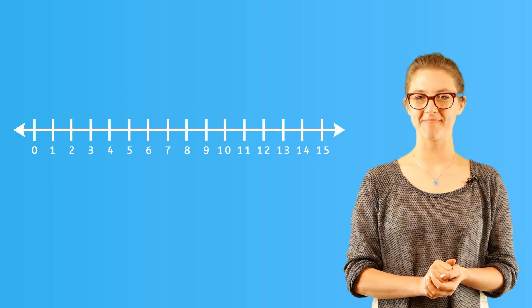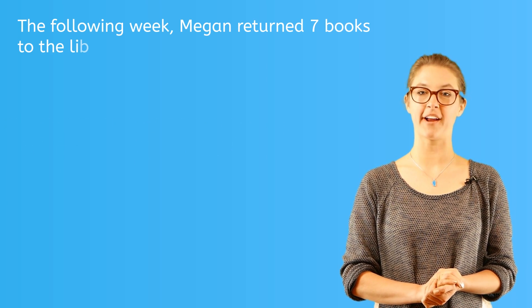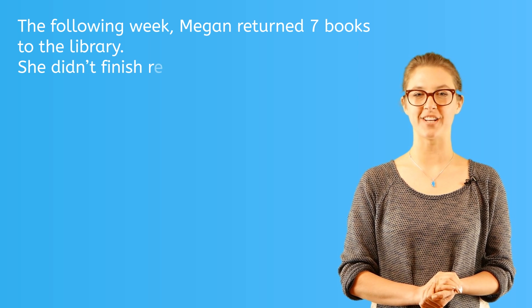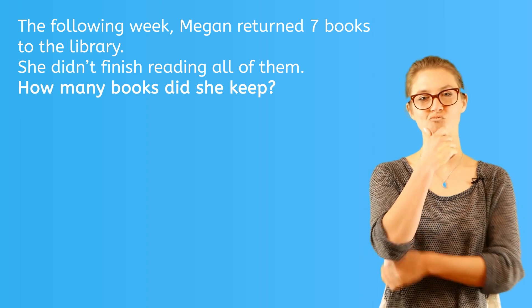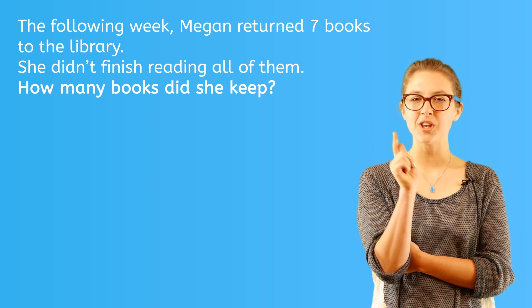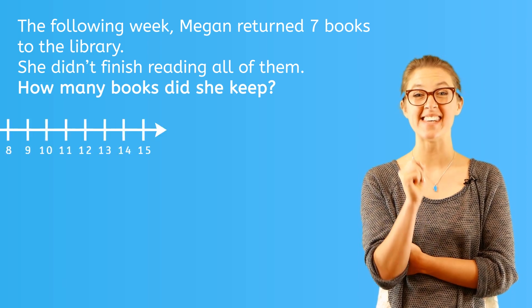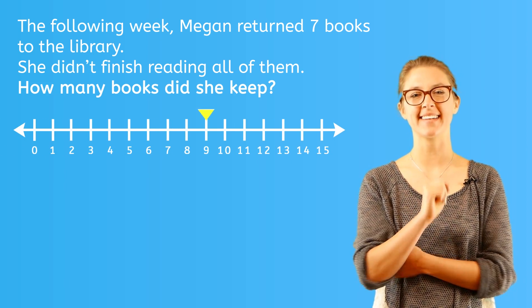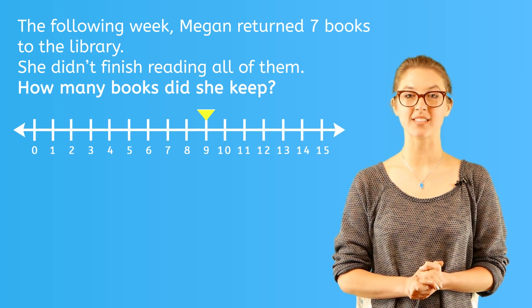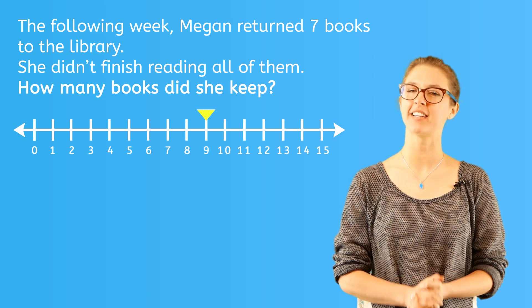Here's a word problem to prove it. The following week, Megan returned seven books to the library. She did not finish reading all of them. How many books did she keep? Well, we know from the other problem that Megan borrowed a total of nine books, so we'll start at nine on the number line. She returned seven books, so that means Megan has fewer books after her visit to the library.